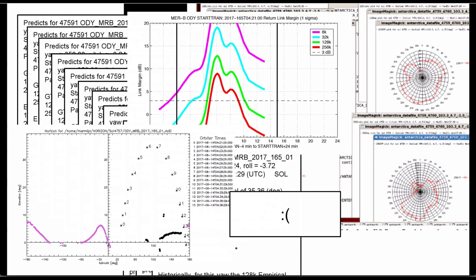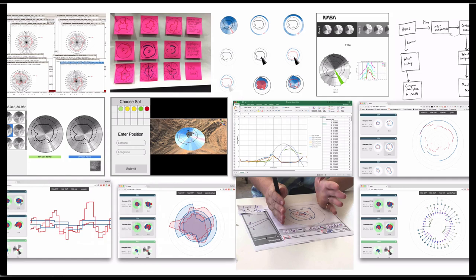To improve this work process, we were asked to design a new tool. Our research and prototyping culminated in the design of a new system called Meridian. This tool measures the amount of data Opportunity can transmit to overpassing satellites under changing conditions.